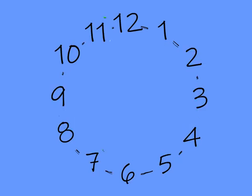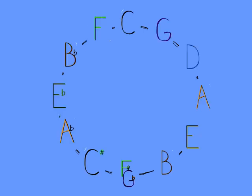Because the circle, like a clock, has twelve positions, it can be divided evenly into sets of 1, 2, 3, 4, or 6 notes.